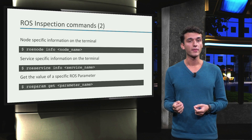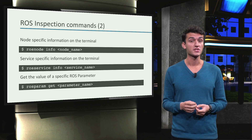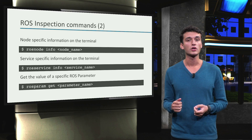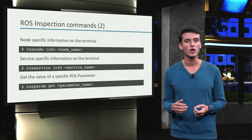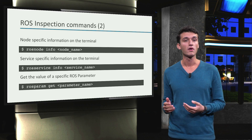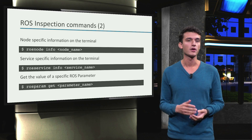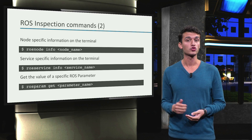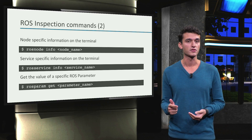To find more information about a specific node, we can use the command rosnode info, followed by the name of the node. This also works for topics and services.